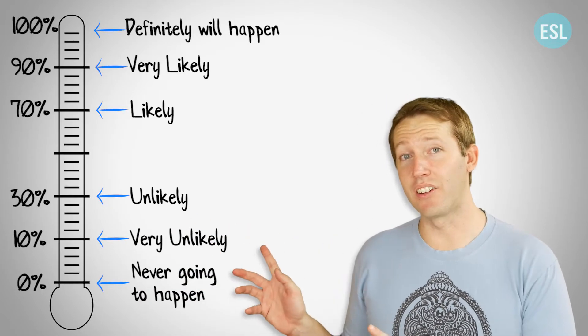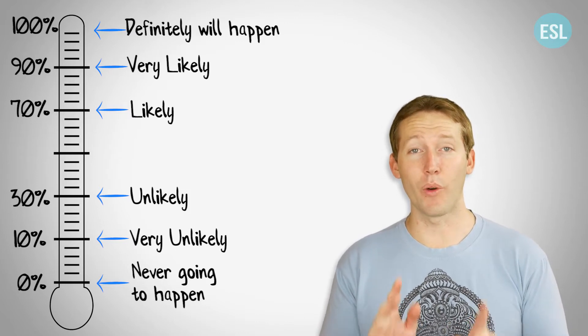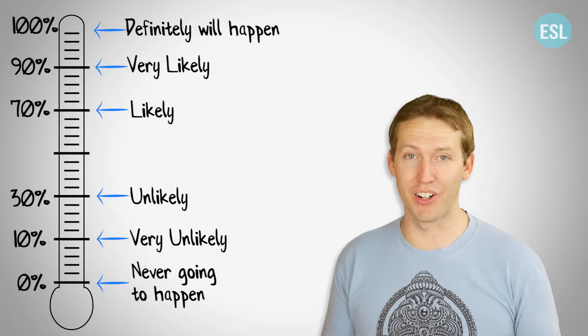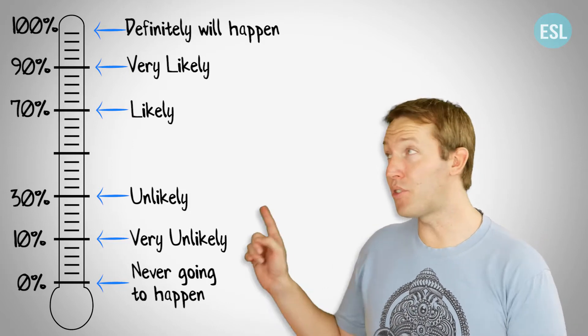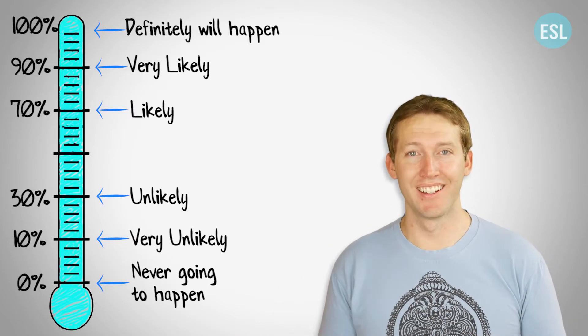Sorry, but those aren't the kinds of odds that we're talking about. Today, we're talking about whether something will or won't happen in the future. This is the scale that's going to measure every one of our phrases. It ranges from 0%, meaning it's never going to happen, up to 100%, meaning it's definitely going to happen.